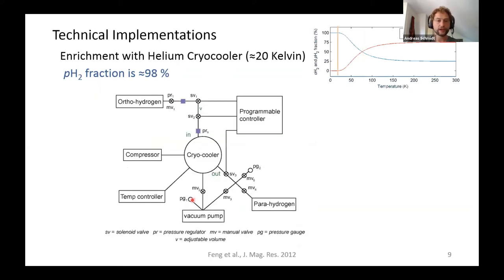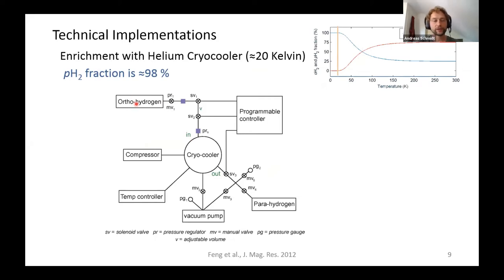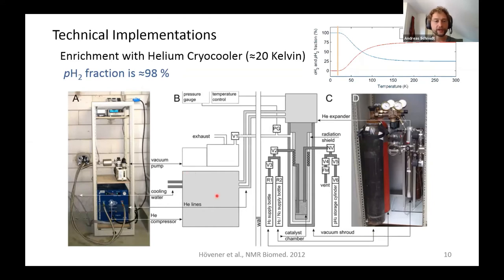If you want maximum enrichment, you go to even lower temperatures — close to 20 K. The approach is the same: room-temperature hydrogen with 25% parahydrogen enters a cryo-cooler based on a helium compressor and expander, cools to 20 K, contacts an iron oxide or activated charcoal catalyst, and upon exiting yields ~98% parahydrogen enrichment, as experimentally demonstrated.